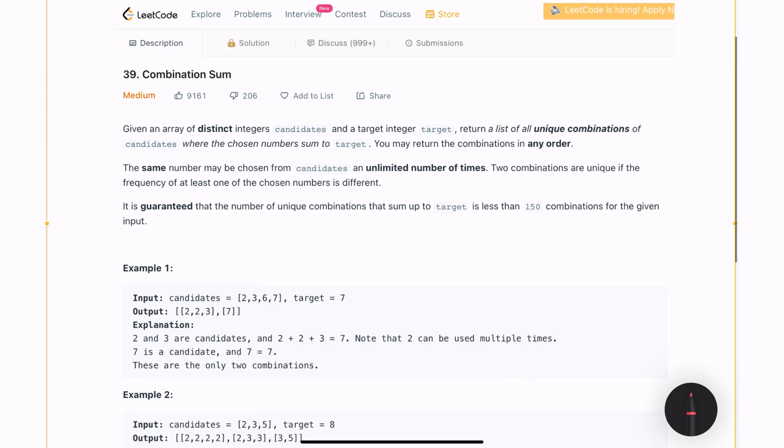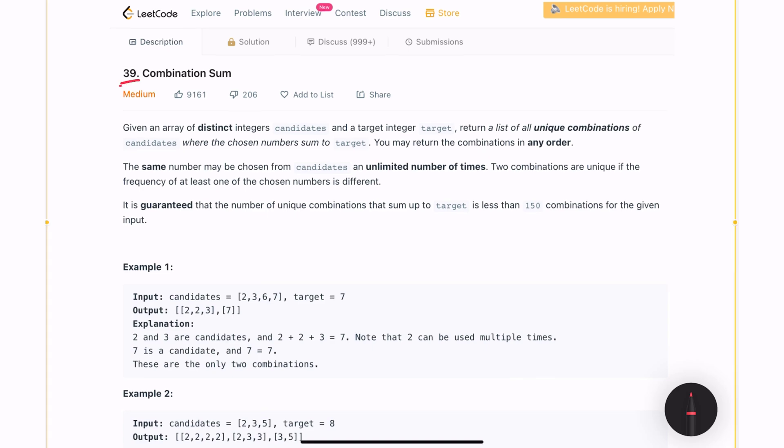In this video we will be solving a LeetCode medium level problem number 39, Combination Sum. The problem statement is we are given an array of distinct integer candidates and a target integer target.